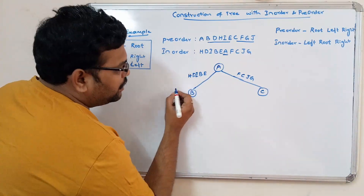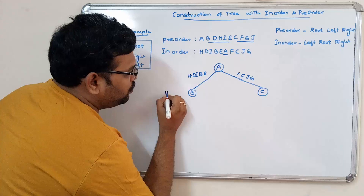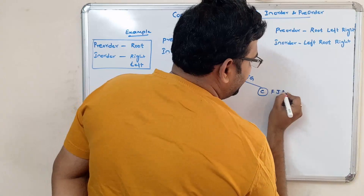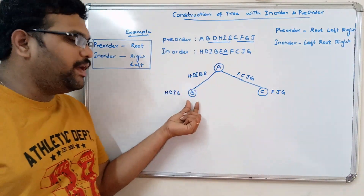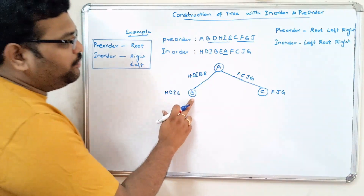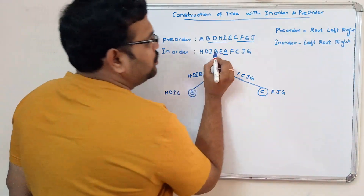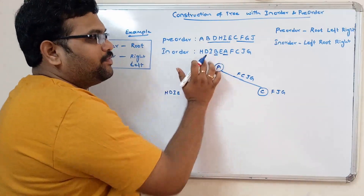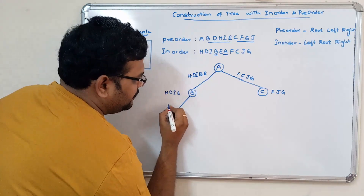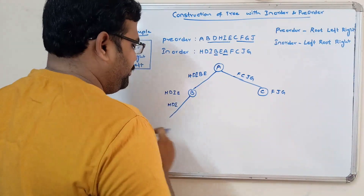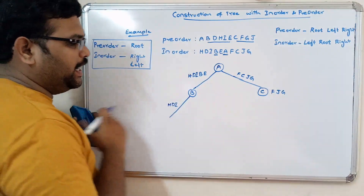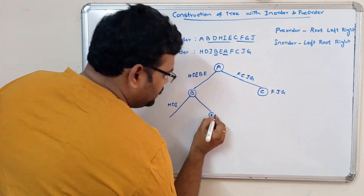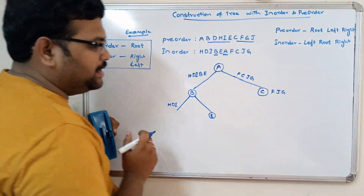After B, there are four elements: H, D, I, E. And for C's sub-tree: F, J, G. Since B is the root node, elements to the left of B in in-order — H, D, I — are the left chain, and E is the right chain. For C as root: F is the left chain, and J and G are the right chains.